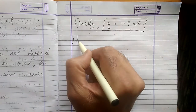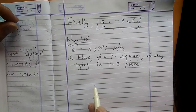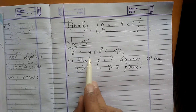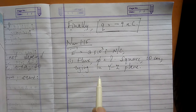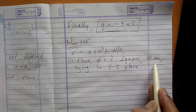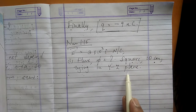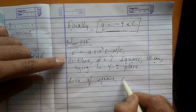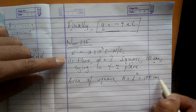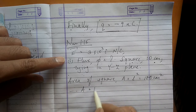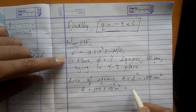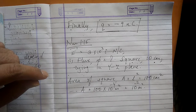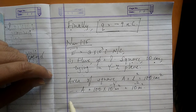Now numerical 1.15. The electric field E⃗ = 3×10³ î Newton per coulomb. We want the flux through a square of 10 cm side lying in the YZ plane. The area of the square is L² = 100 cm² = 10⁻² m². Electric flux Φ = E⃗ · A⃗, so we need the area vector A⃗.